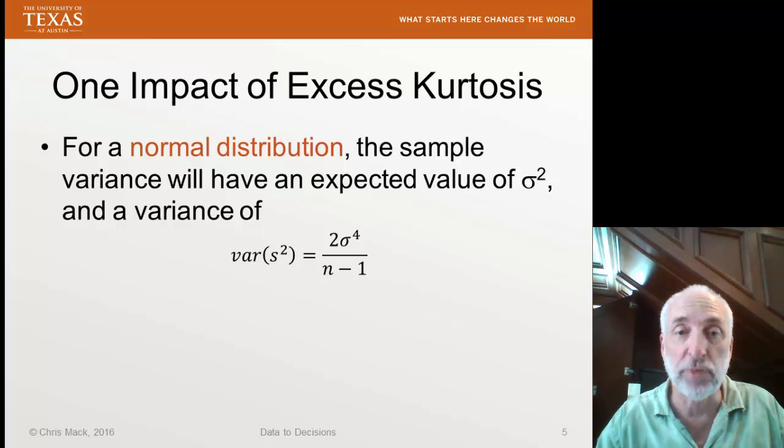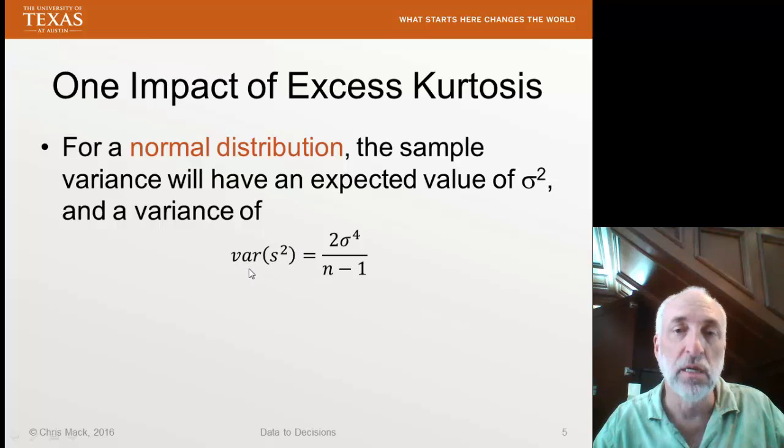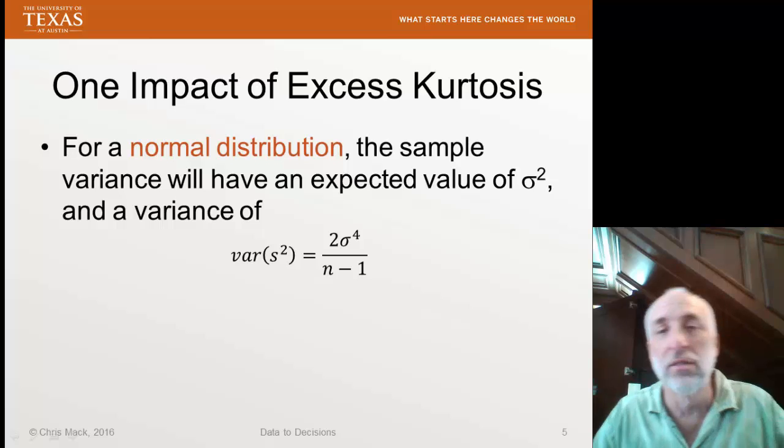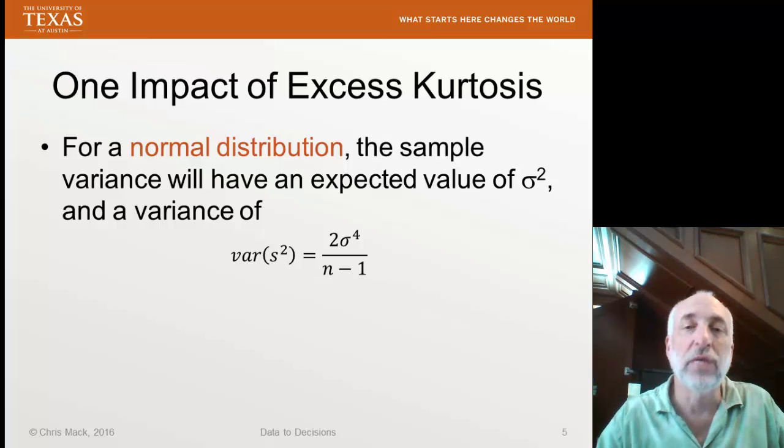The sample variance will have an expected value of the population variance if we use an unbiased estimator, which we normally do. But what is the uncertainty in that estimate? Well, for a normal distribution, the variance of the variance, the variance of our estimate of the variance of the population, in other words the variance of our sample variance, is two times the true standard deviation to the fourth power divided by n minus one.